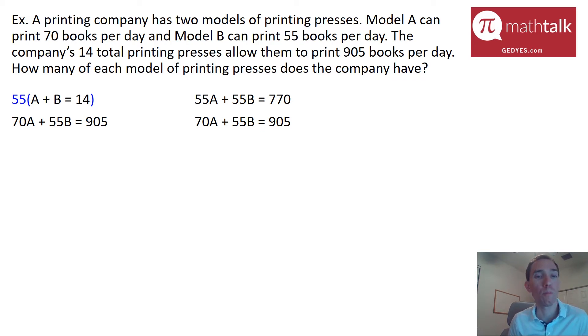And the reason I do that is now my model B coefficients are the same, which means if I subtract the equations, I'll get rid of B. However, in this example, if I subtract the second equation from the first one, then I'm going to get a negative A value, which is fine. I just would rather not have negatives. So to make it a little bit easier, I'm just going to switch the two equations. I'm going to bring the second one to the top and the first one to the bottom, which is totally fine. You can do that whenever you want to. No problem at all. So now I'm going to subtract my two equations. And when I do that, 70A minus 55A is 15A. 55B minus 55B goes away. There's just nothing left. Then 905 minus 770 is 135.